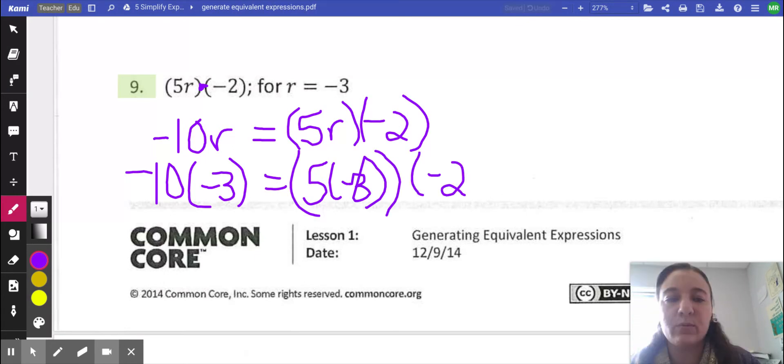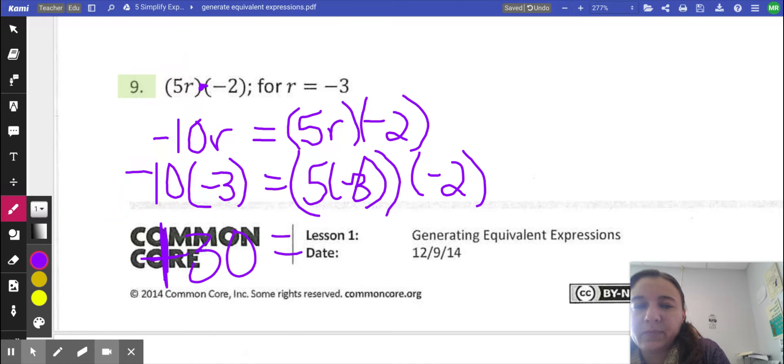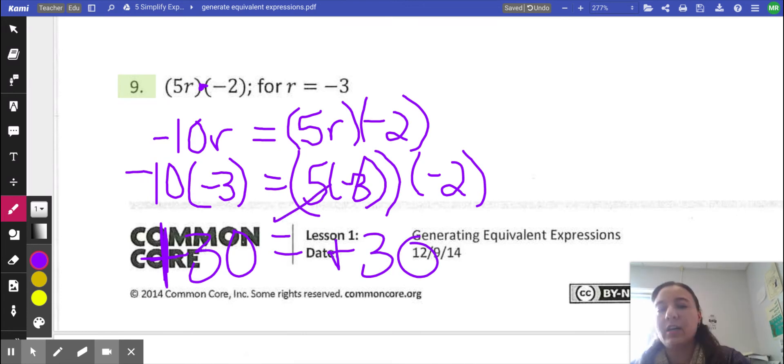And I'm going to check it by taking out the R and substituting it in with the number they gave me, which is negative three. Substitution. You got to use parentheses when you substitute. You got to, got to, got to. So I'm going to put in the calculator, negative ten parentheses, negative three, which really means times. I want to multiply two negatives. It makes a positive. Taking away negativity is positivity. So that's positive 30. And then this is a whole bunch of times. Five times negative three is a negative 15. And negative 15 times negative two is a positive 30. And that works out. Don't believe me? Check with your bestie. 30 equals 30. Check.